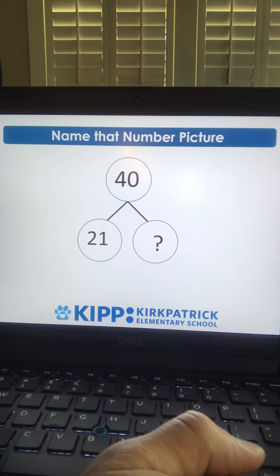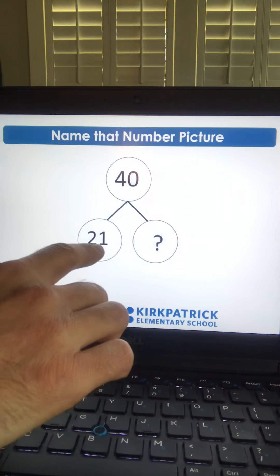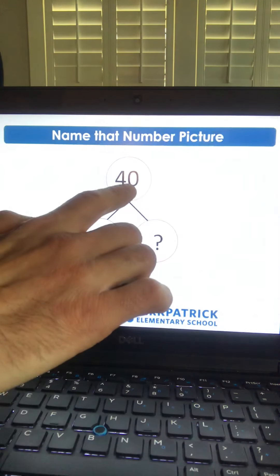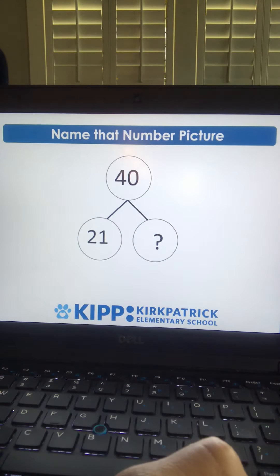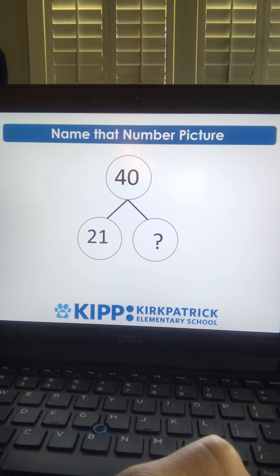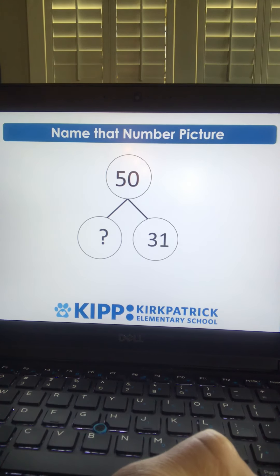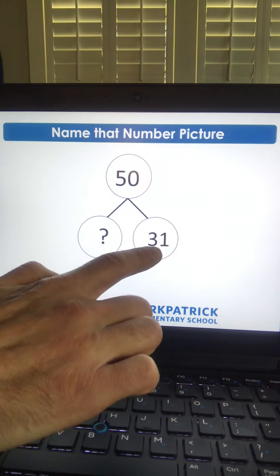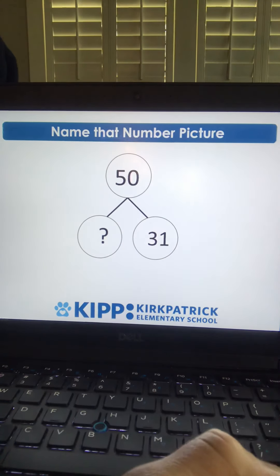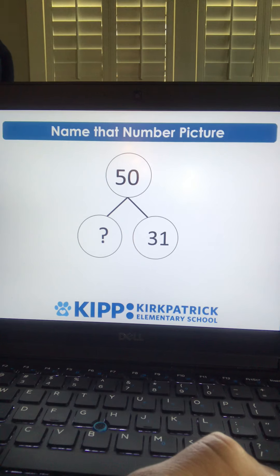Here's a number bond problem. 21 and what number is equal to 40? That's 19. Another number bond problem: 31 and what number is equal to 50? That's 19 again.